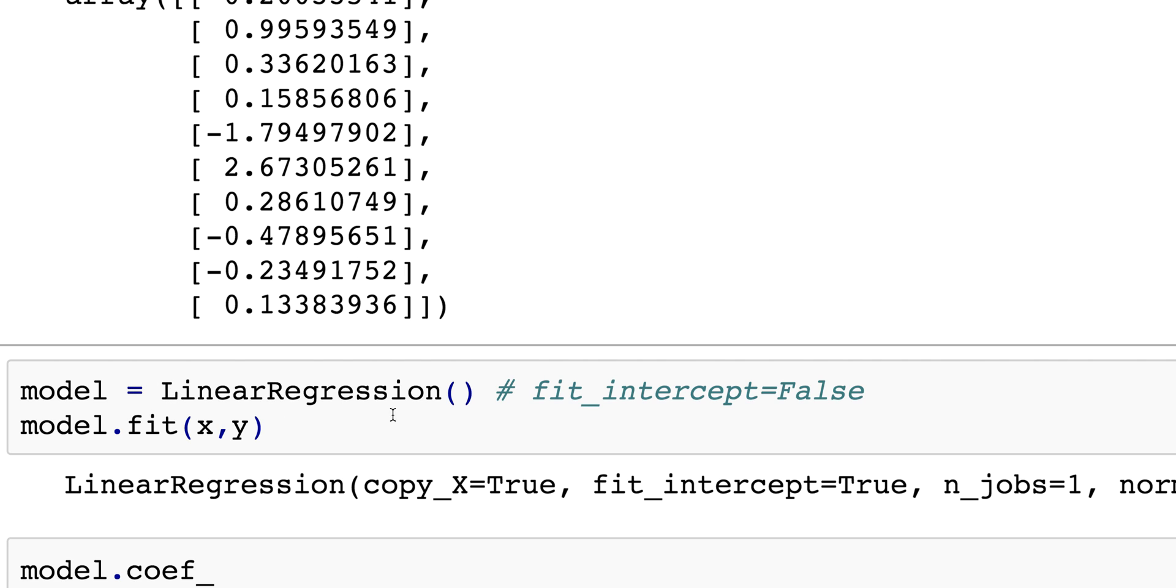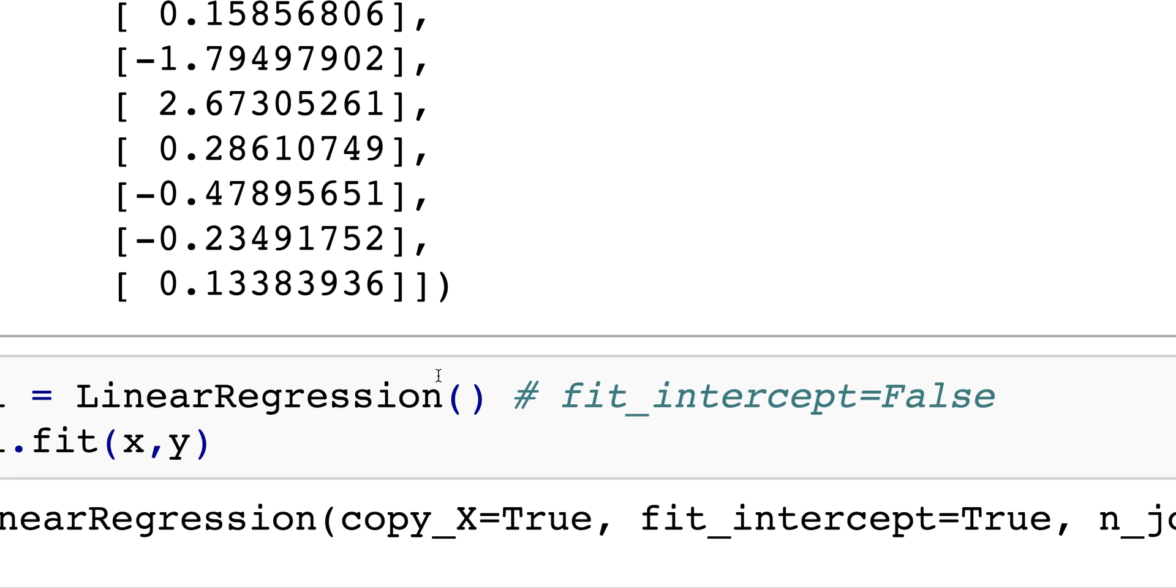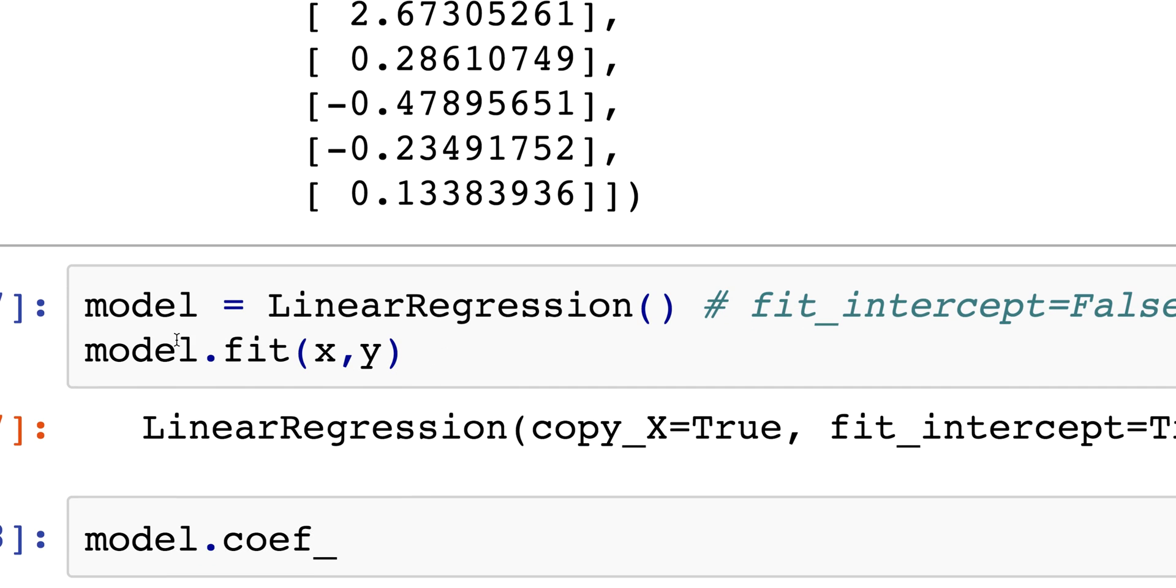Once I do that all I have to do is say model equals LinearRegression and this is a little trick with most sklearn things, all you have to do is go model.fit. Keep this whole dot fit thing in mind because you'll be using that over and over again in scikit-learn.